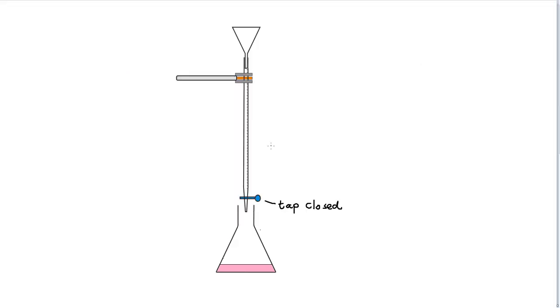Before we start the titration procedure, the first step is to make sure that the tap is closed on the burette. I'm going to put a funnel at the other end and very carefully add the acid to the burette. Once we've done that, we'll take a very careful look at the level of the liquid, taking care to observe the bottom of the meniscus.